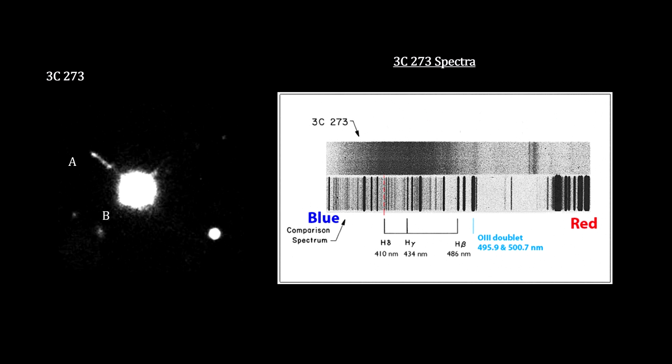Using the baseline Balmer series for hydrogen, along with a strong line for oxygen, he found a redshift of 0.158.